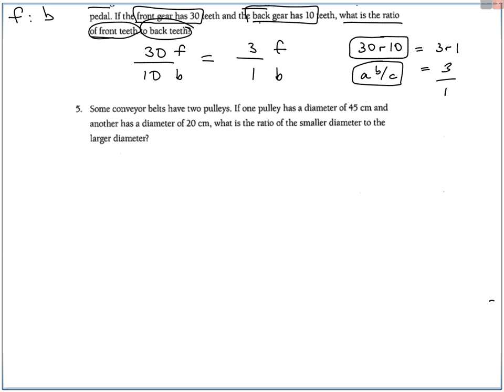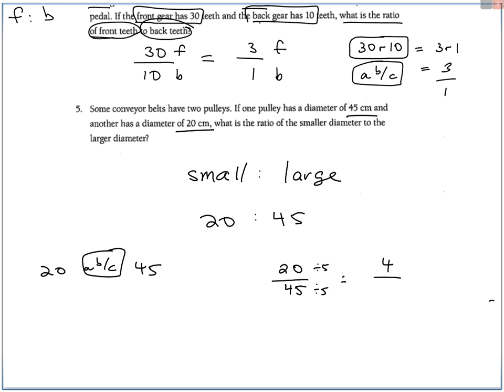Some conveyor belts have pulleys, two pulleys. If one pulley has a diameter of 45 and the other has a diameter of 20, what is the ratio of the small to the large? So they want this ratio, small to large. The small number is 20, the big number is 45. Put that in your calculator like 20, ABC button, 45, and it will do it for you. If you want to do it by hand, you have to know that they both divide by 5. 20 divided by 5 is 4, 45 divided by 5 is 9. So there's the ratio, 4 to 9.